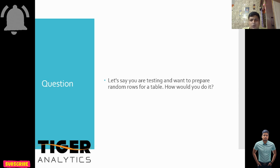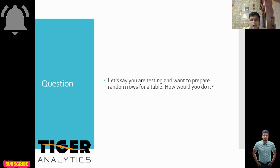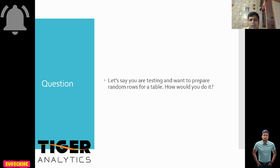Another question: suppose you are in a testing environment and you want to prepare random rows for a table — how would you do it? They have given a scenario where you need to perform testing, but you need some data first. How do you prepare random rows for a table? You should be able to write a query for this.